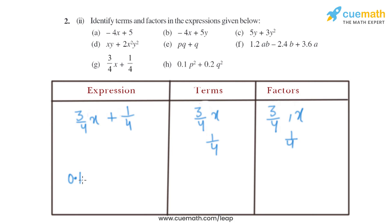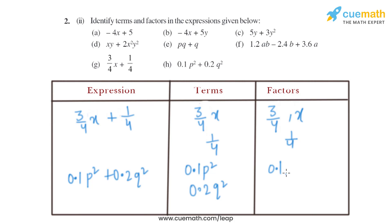Now let's move on to the last part. The expression given is 0.1P square plus 0.2Q square. The terms are 0.1P square and 0.2Q square. The factors of 0.1P square will be 0.1, P, and P. Similarly, the factors of 0.2Q square will be 0.2, Q, and Q — as it is Q square, there will be two Q's.